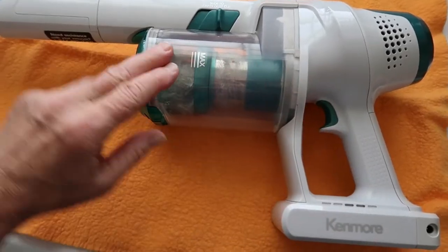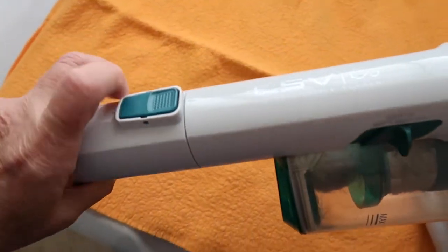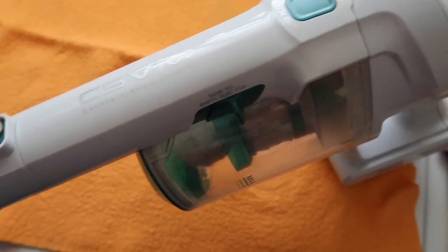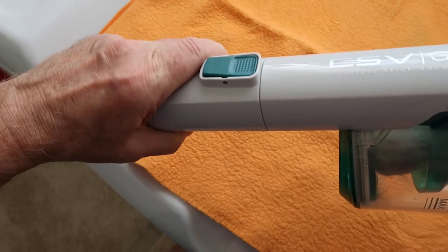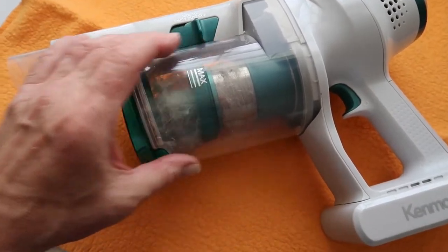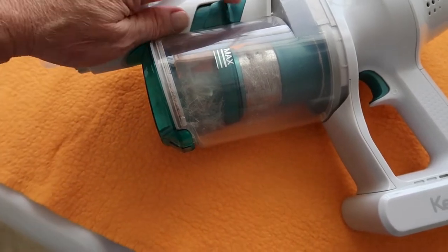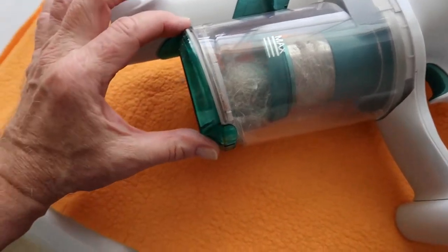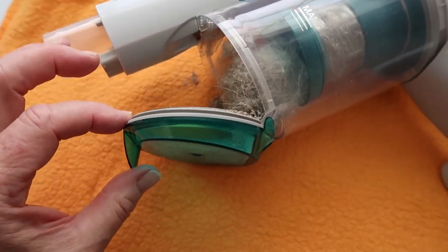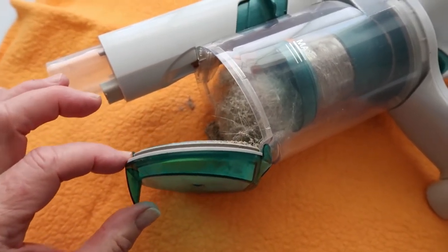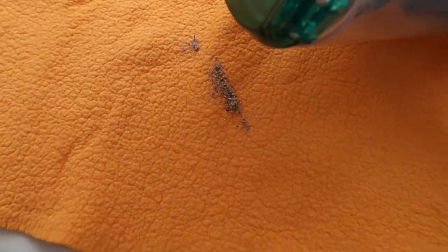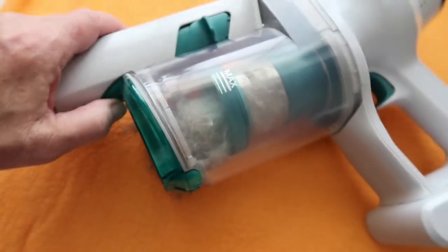The first thing I'm going to do is separate this handle unit, and we do that by pressing down here, and then that whole thing pulls apart from the stick. Now, the most basic thing, if you put this over a trash can and push this lever, you see the bottom opens up. I'm doing it here just for sake of clarity, but if you do this over a trash can, all that will empty, just like it emptied onto the towel I have out here.